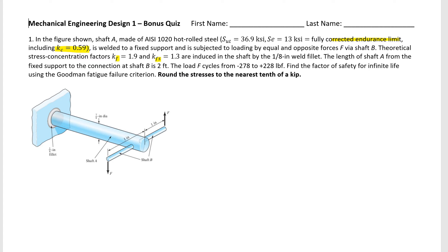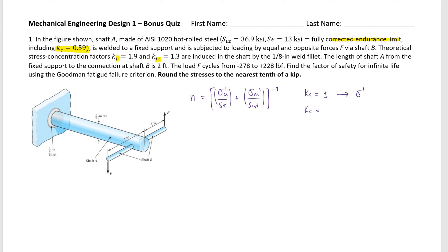The problem asks us to calculate the factor of safety. Goodman compares the alternating stress to the endurance limit and the mean stress to the ultimate strength, and 1 over that gives the factor of safety. The rule is that you use a load marine factor of 1 if you want to use von Mises when you have more than one type of stress.